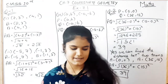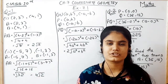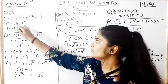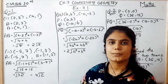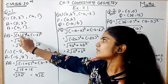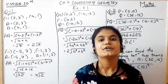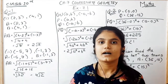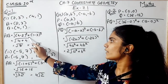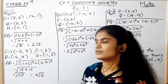Now starting Exercise 7.1, question number 1. We have to find the distance between two given points with their coordinates. In the first sub-part, we are given points A(2, 3) and B(4, 1). We find the distance between A and B using the distance formula: √[(x2−x1)² + (y2−y1)²], which is equal to √2.